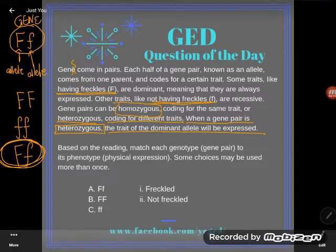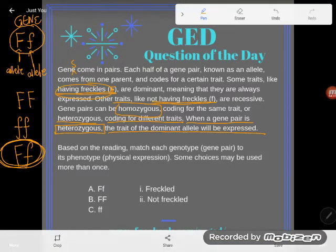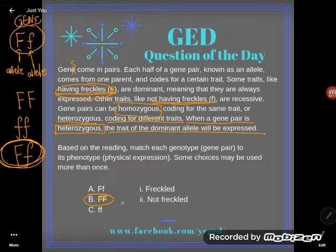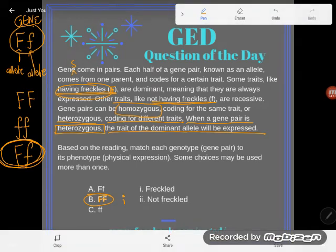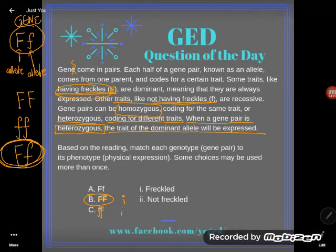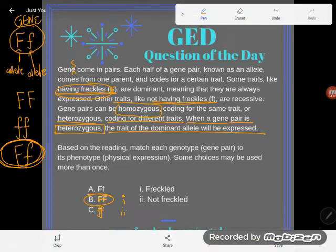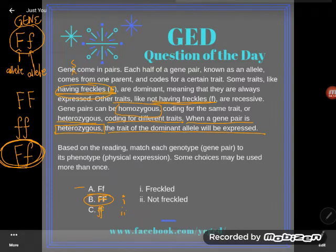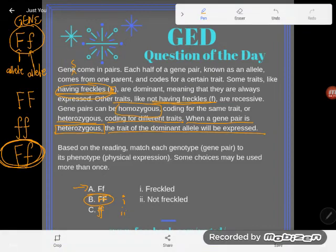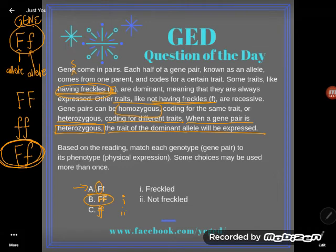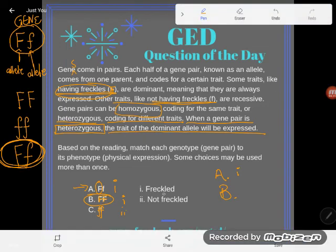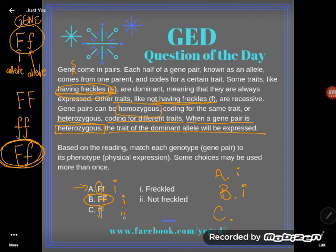Capital F is dominant and codes for having freckles. So if both your alleles say have freckles, you end up freckled. Same the other way around — if both alleles say not freckled, you end up not freckled. When your alleles are heterozygous, like capital F and lowercase f, they're telling the gene to do different things — but the capital F wins, and he ends up freckled. So final answers: A — freckled, B — freckled, and C — only when you have both recessive alleles — not freckled.